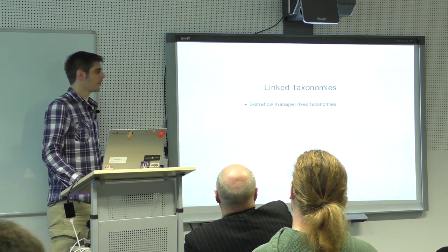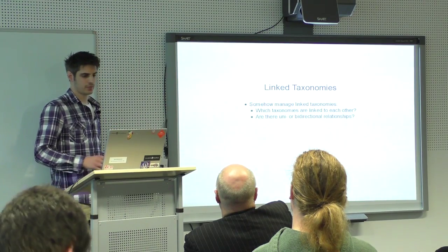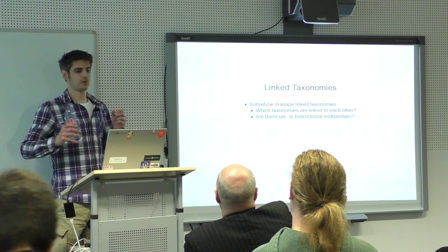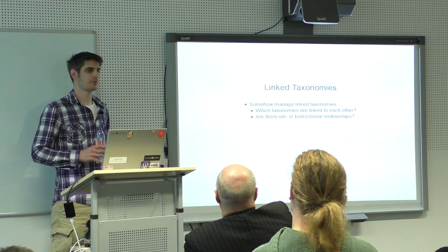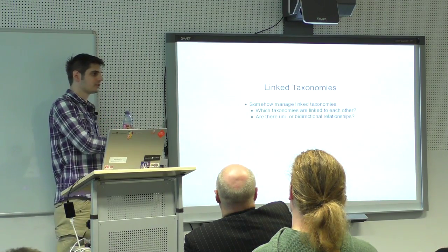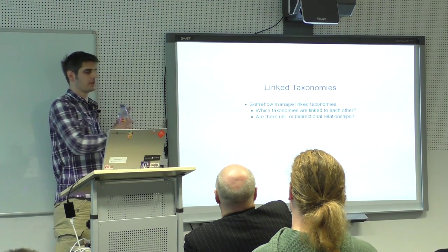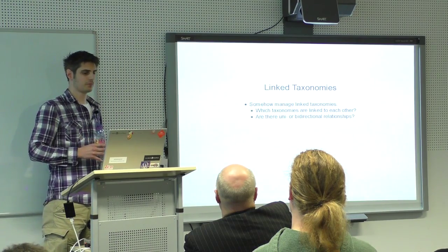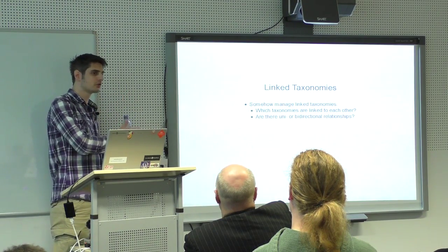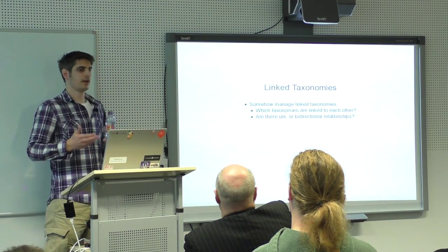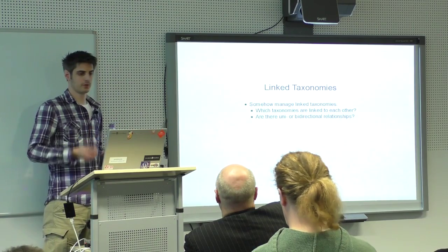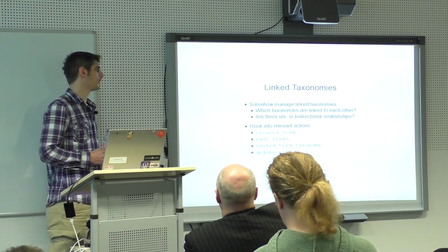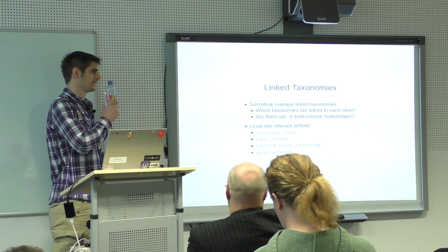We need to manage the linked taxonomies — which taxonomies are linked to each other, and what is the type of relationship. Do we have a master taxonomy where changes are propagated to slave taxonomies? Or is there a bidirectional relationship, where changes in either the user category or the default post category are propagated in both directions? To do this, we just have to hook into four actions — basically three actions.